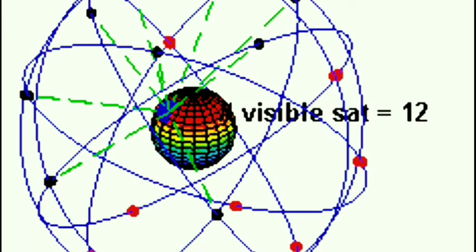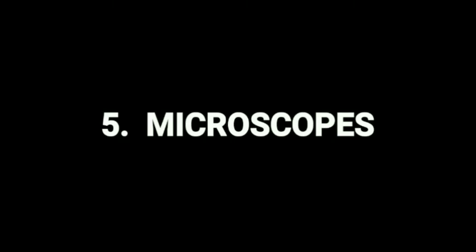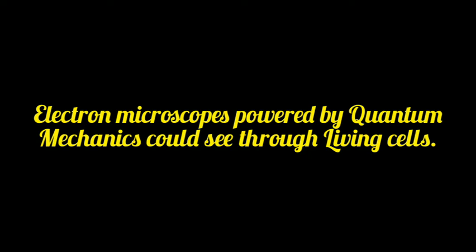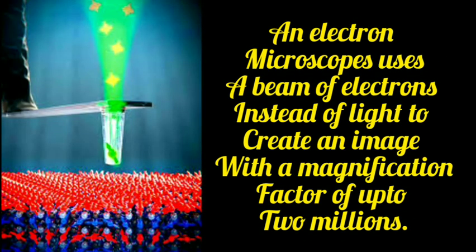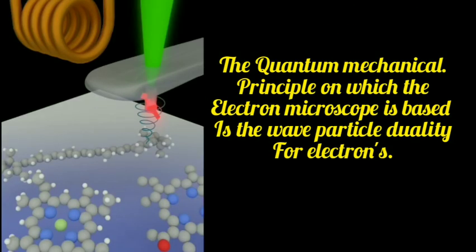Electron microscopes: electron microscopes powered by quantum mechanics can see through living cells. Electron microscopes use a beam of electrons instead of light to create an image with a magnification factor of up to two million. The quantum mechanical principle on which the electron microscope is based is the wave-particle duality for electrons.